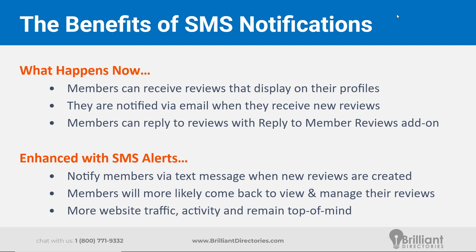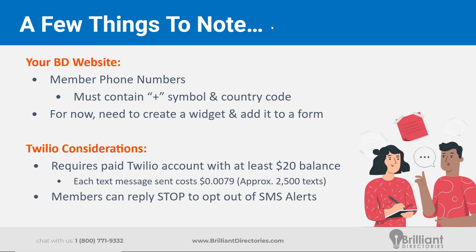This could help keep your website and community top of mind for your members so they don't forget they have an account and that the community exists — we want them to stay active. A few quick things to note: on your Brilliant Directories website, your members' phone numbers must contain a plus sign and the country code. For example, a North American phone number would start with +1. For now, we'll also need to create a widget and add it to a form — it's really simple, and we'll show you step by step.